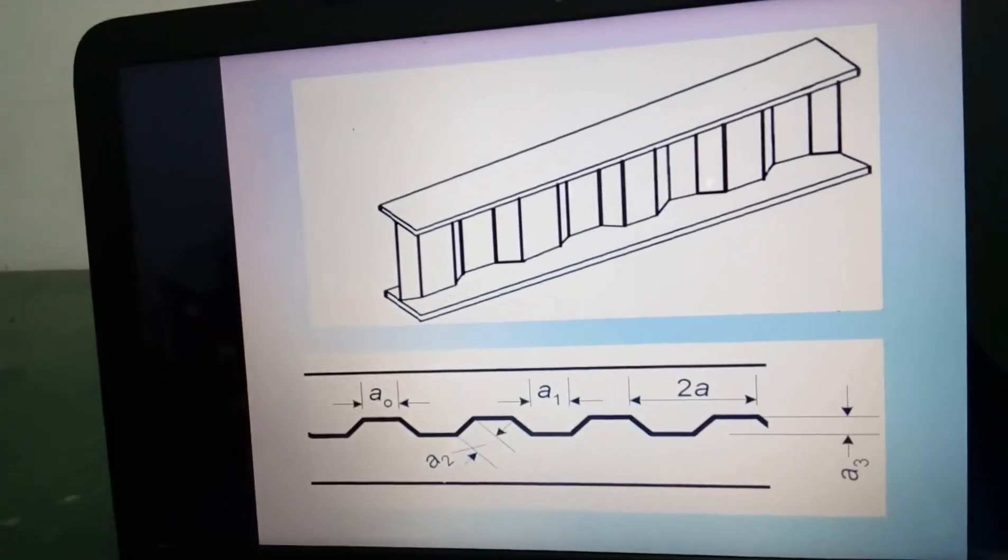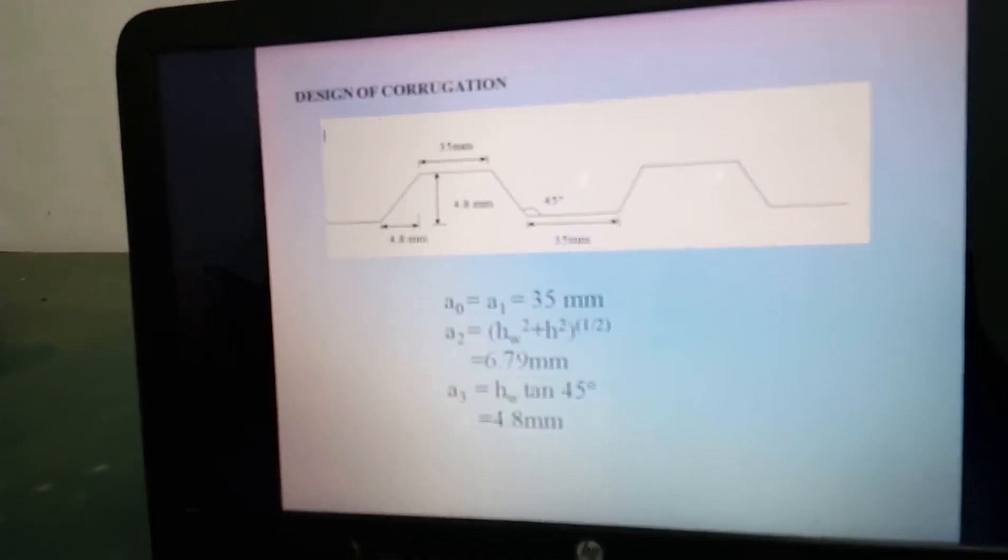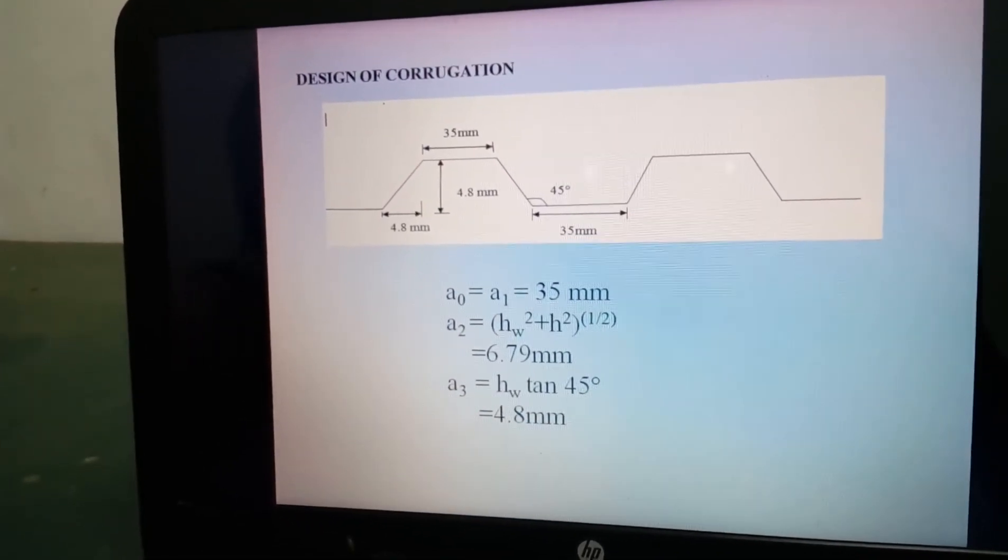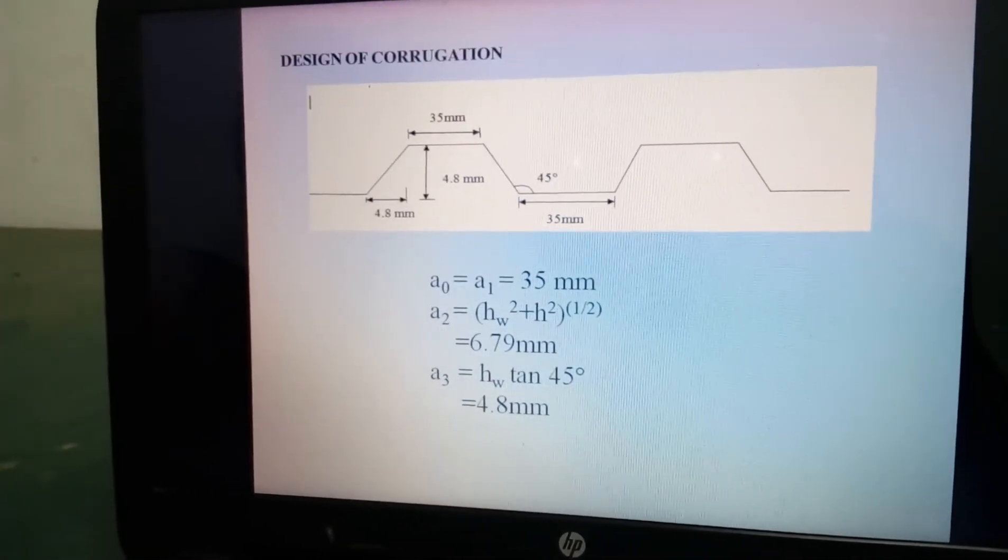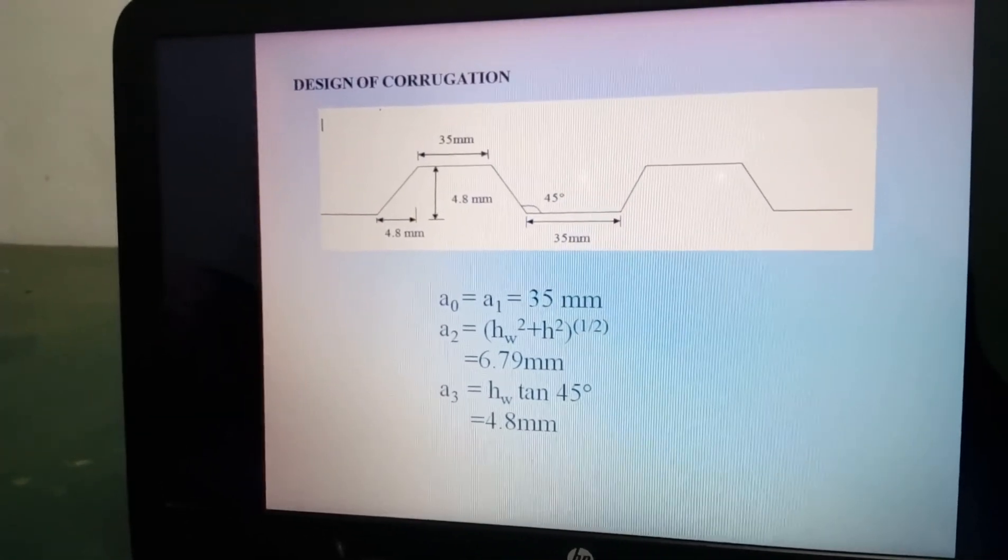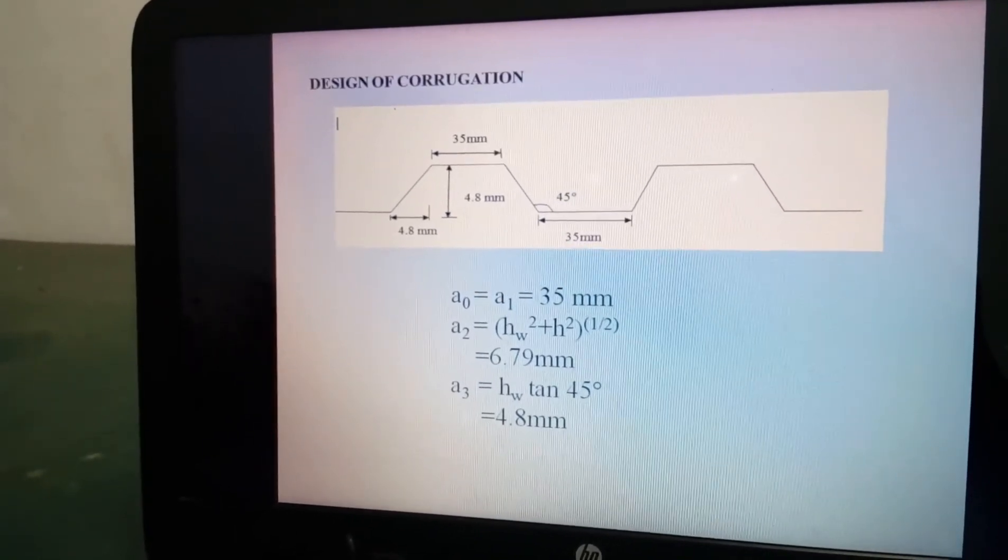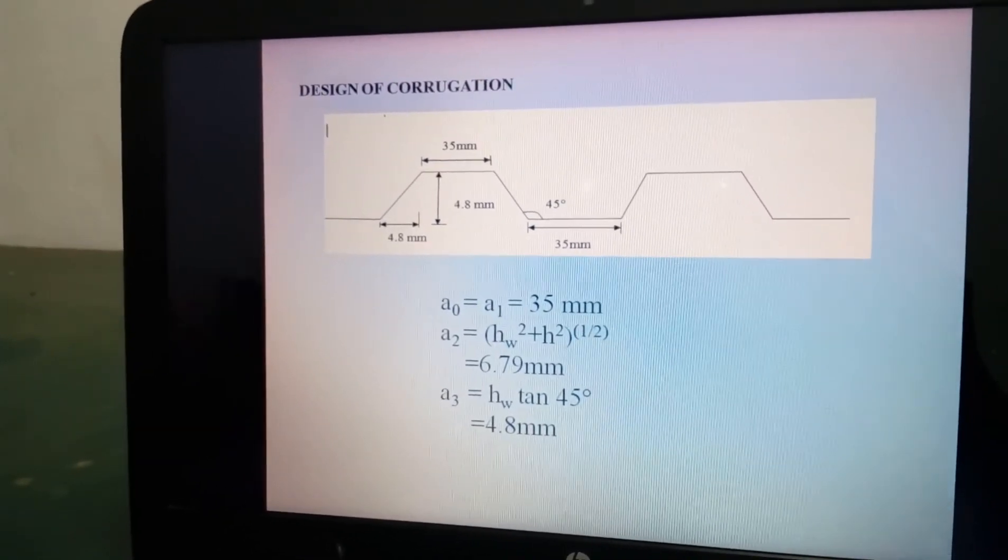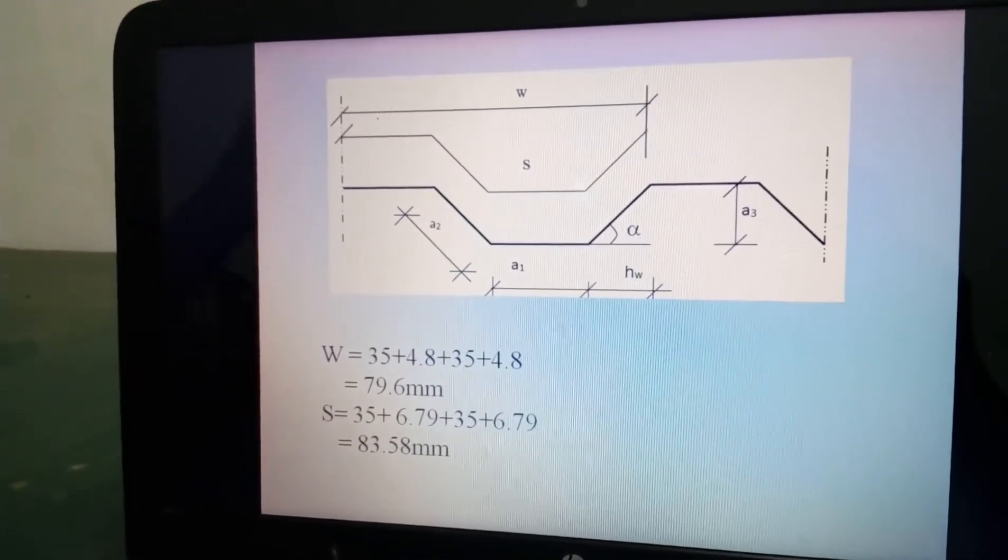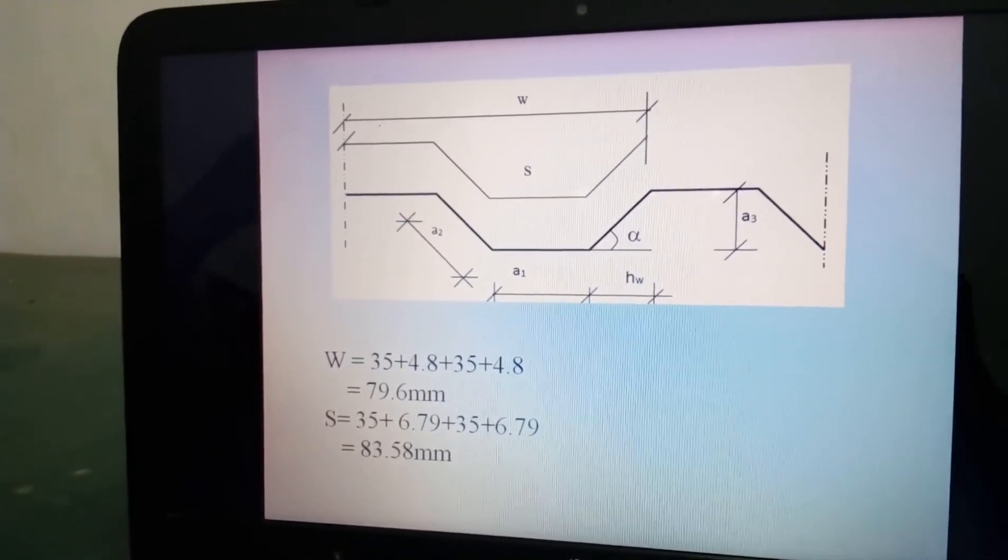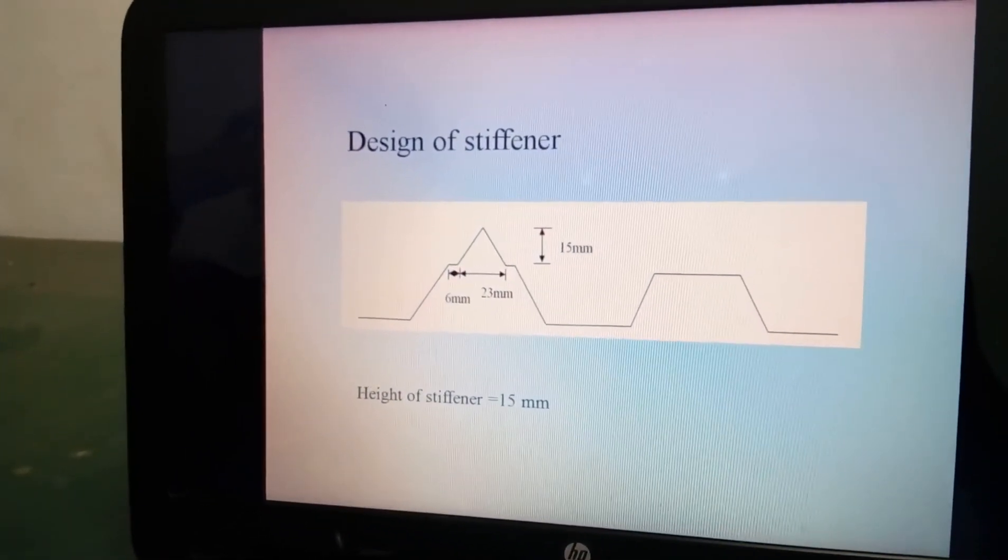This is the corrugated web line drawing. This is the design of corrugation. In section 1 all the corrugations are designed like this: A0 equals A1 equals 35 mm, A2 is 6.79 mm, A3 is 4.8 mm. The corrugation W equals 79.6 mm, S equals 83.58 mm.